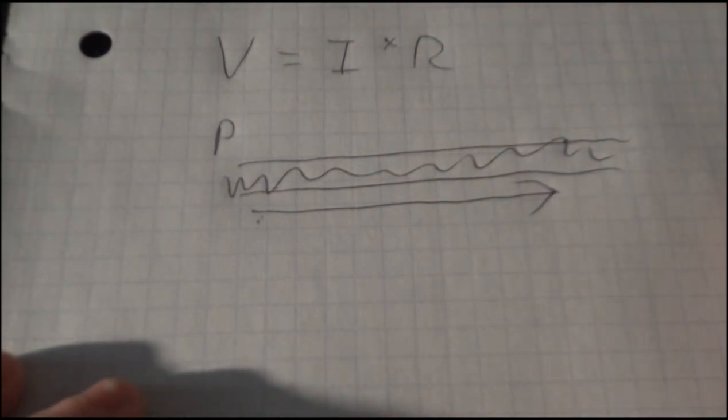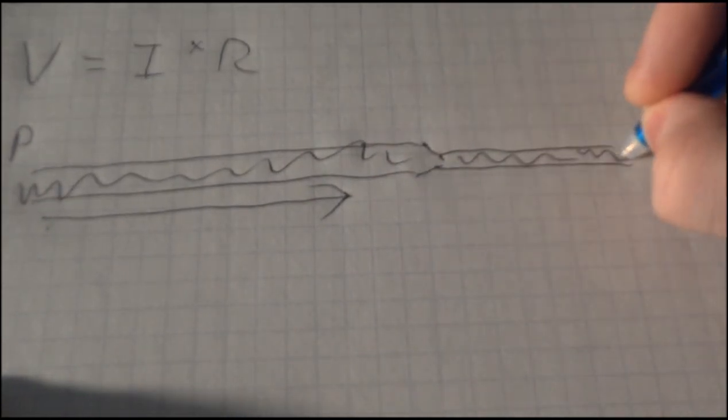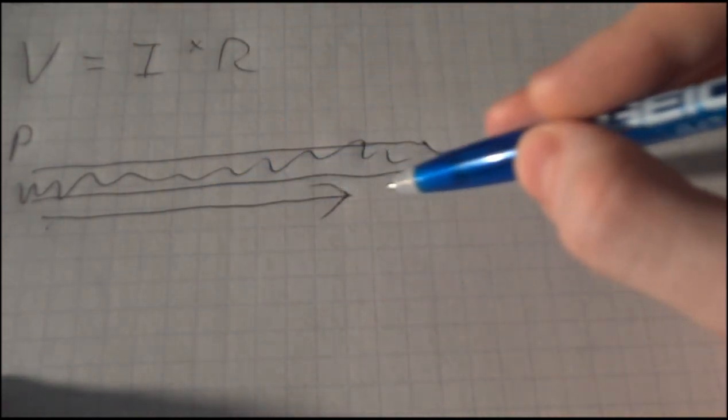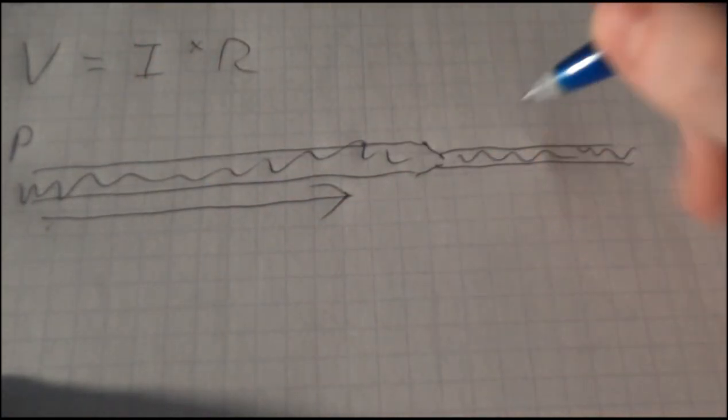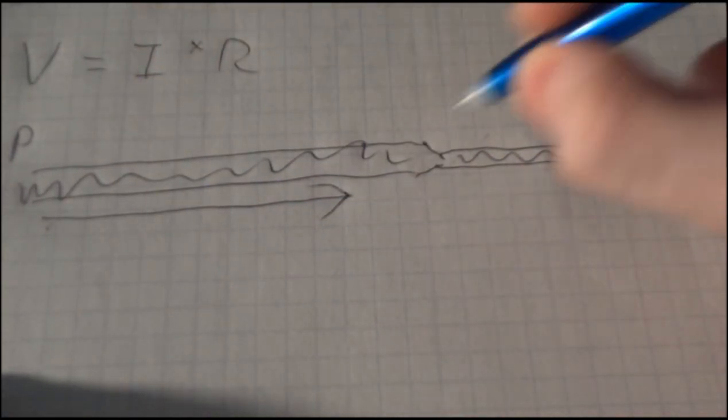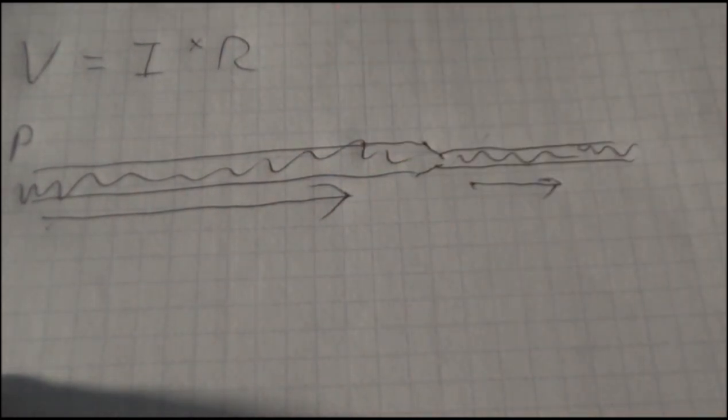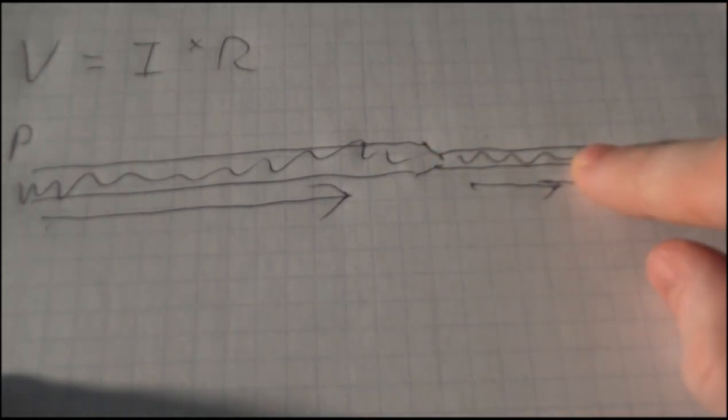Now if we wanted to look at something like resistance, well let's say we made this hose smaller here toward the end. Well now what we've done by shrinking the size of the hose, now this water flow is now restricted. It can't move as much water through here at the same rate as it did in this section.